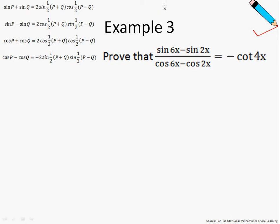In example number 3, we are asked to prove that the left-hand side of this identity is equal to the right-hand side of this identity. So how are we going to do it?